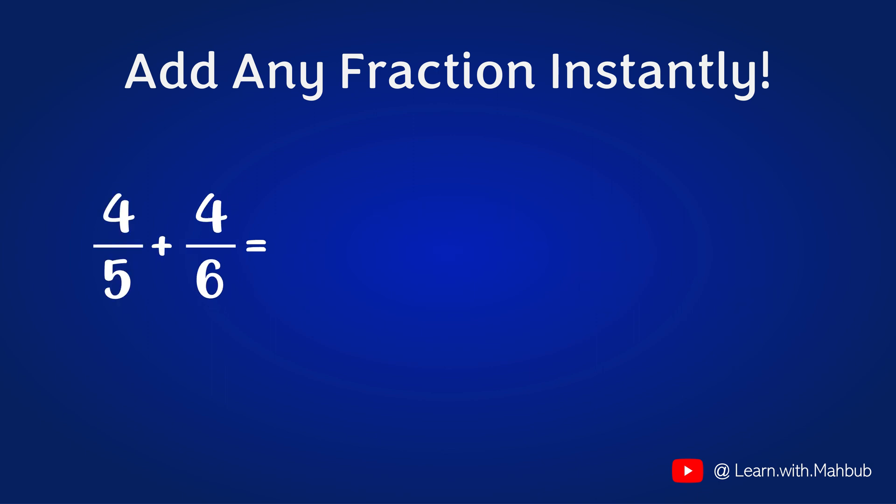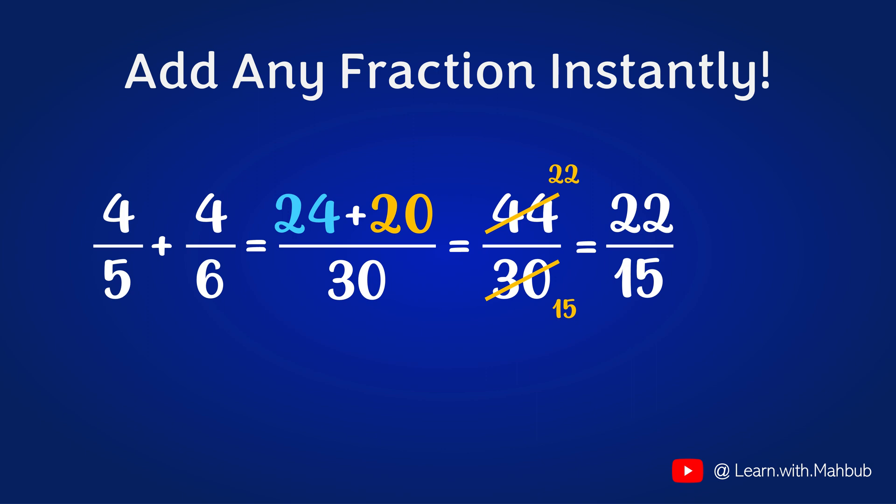Let's try one more. 4 fifths plus 4 sixths. 5 times 6 is 30. 4 times 6 is 24 and 4 times 5 is 20. Adding them will be 44 by 30. 2 times 22 is 44 and 2 times 15 is 30. So it will be 22 by 15.